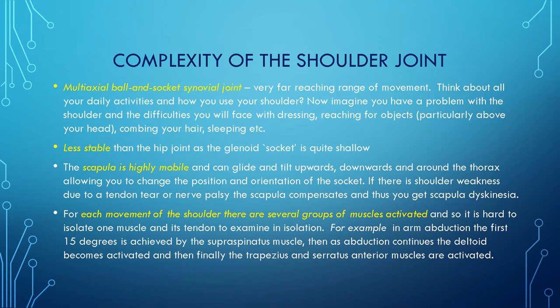The scapula, the posterior part of the shoulder joint, is highly mobile. It can glide in and out, tilt upwards and downwards, and rotate around the thorax, allowing you to change the position and orientation of the socket. If there's shoulder weakness due to a tendon tear or nerve palsy, the scapula can compensate. Part of the shoulder examination involves looking behind and watching the scapula move, watching for abnormal movements that may hint at a long thoracic nerve palsy or a rotator cuff tear.